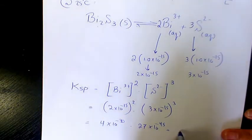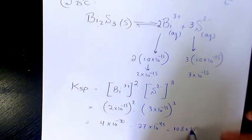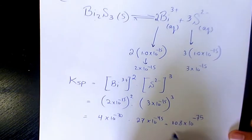That's going to be 108 times 10 to the power of negative 75, which will be 1.08 times 10 to the power of negative 73.